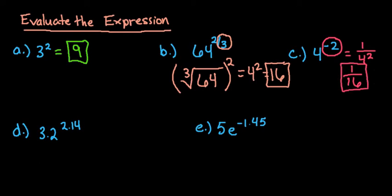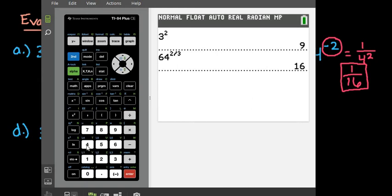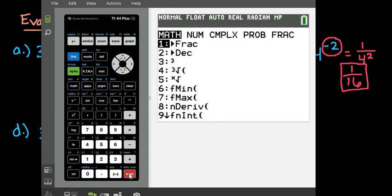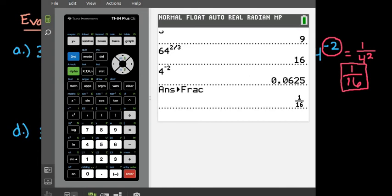if they say leave it as a decimal, then you would just plug it into your calculator and put it as 0.0625. If it wanted it as a fraction, you can use the math answer as a fraction button, and it will convert it into a fraction.